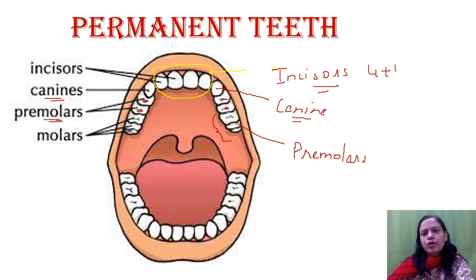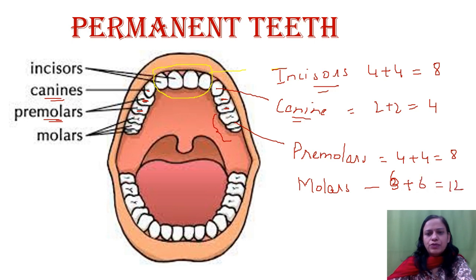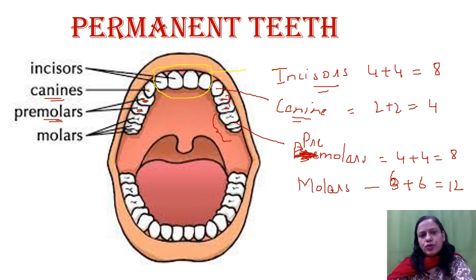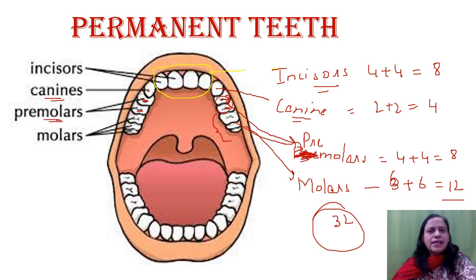So what is the total count? Incisors: four in the upper jaw and four in the lower jaw — that makes eight. Canines: two in the upper jaw and two in the lower jaw — that makes four. Premolars: four in the upper jaw and four in the lower jaw — that makes eight. Molars: six in the upper jaw and six in the lower jaw — that makes twelve. So 12 plus 8 is 20, plus 8 is 28, plus 4 is 32. Total of 32 teeth — 16 in the upper jaw and 16 in the lower jaw.